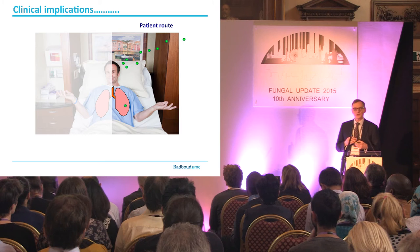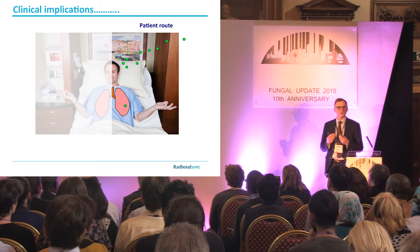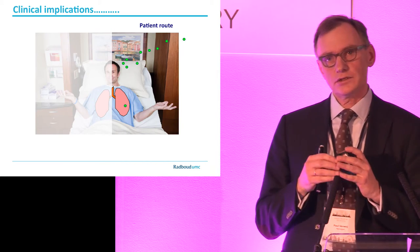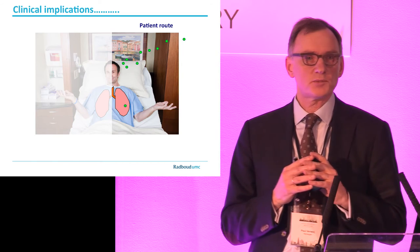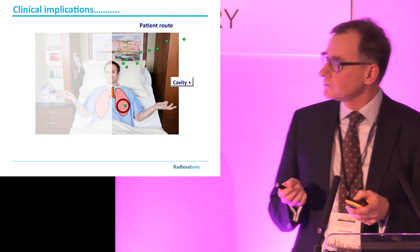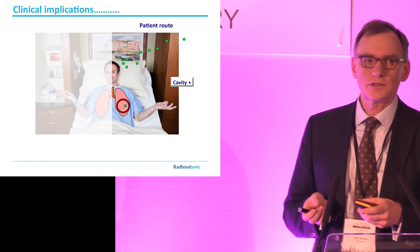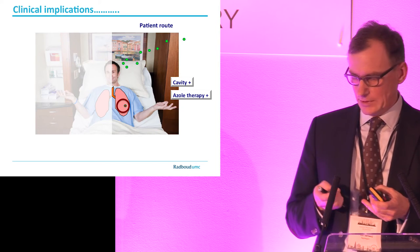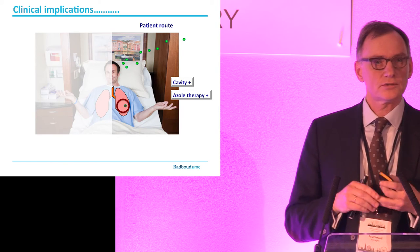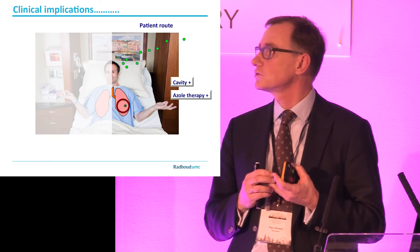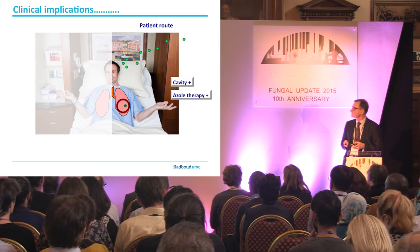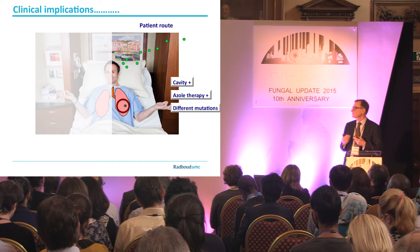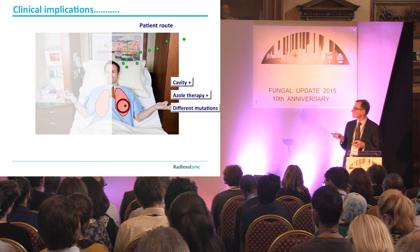Thinking about clinical implications, it is important to recognize two different routes of infection. The first is the patient route, where patients inhale azole-susceptible spores. When these patients develop a cavity and are treated with azoles for a long time, there is a risk of resistance developing. In the cavity the Aspergillus sporulates, and sporulation appears to be a strong enhancer of acquiring mutations — if you take samples you find many different mutations. The fungus acquires these mutations under the pressure of azole therapy.